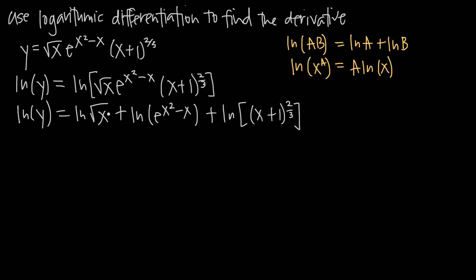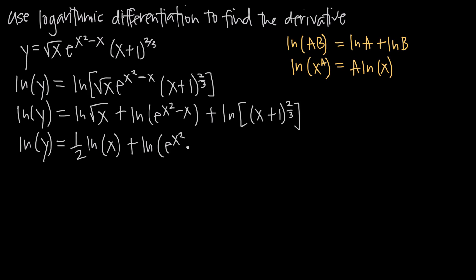The square root of x is the same as x to the 1 half, so this becomes natural log of y on the left, and on the right, natural log of x to the 1 half, which equals 1 half times the natural log of x. Before simplifying the second natural log, we use the exponent rule to separate the exponent: we write the natural log of e to the x squared times e to the negative x. For the third natural log, we use the same rule to bring the 2 thirds exponent out in front, giving us plus 2 thirds times the natural log of x plus 1.